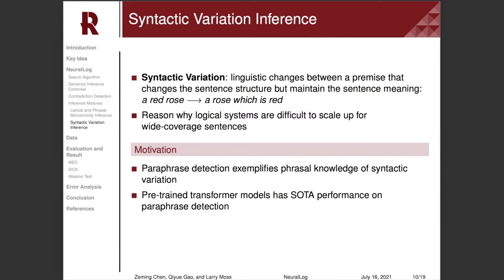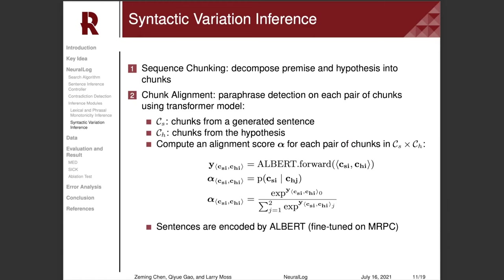Our third module conducts syntactic variation inference. We consider syntactic variation as linguistic changes between a premise and a hypothesis that change the structure of the sentence while maintaining the meaning. Our motivation is that paraphrase detection exemplifies phrasal knowledge of syntactic variation. Pre-trained transformer models have shown state-of-the-art performance on detecting paraphrases. So, we propose to use pre-trained language models to do syntactic variation inference.